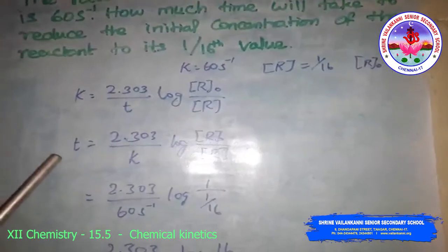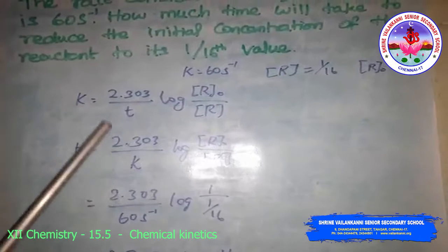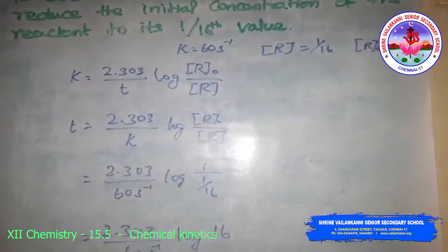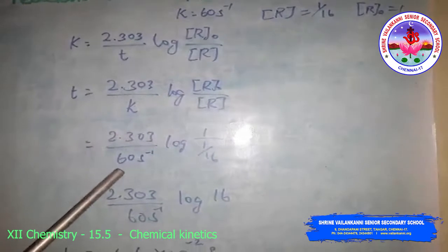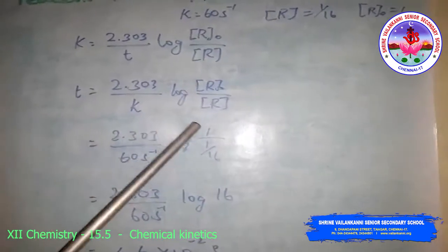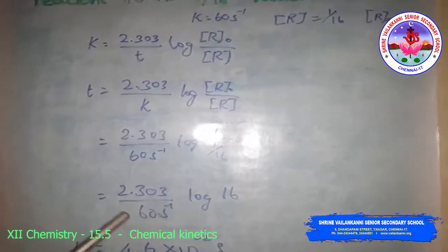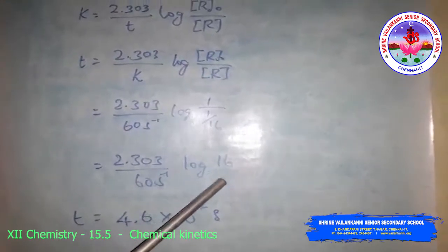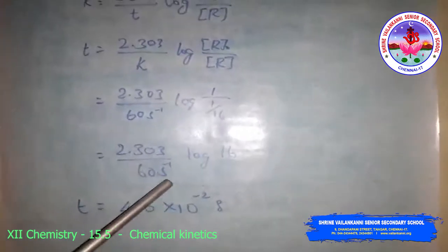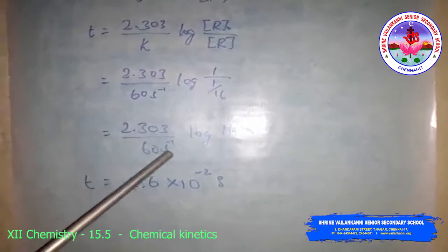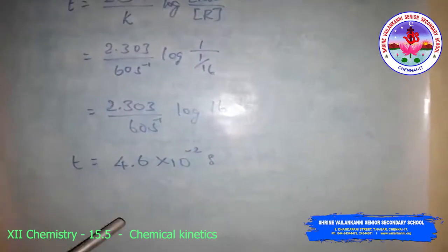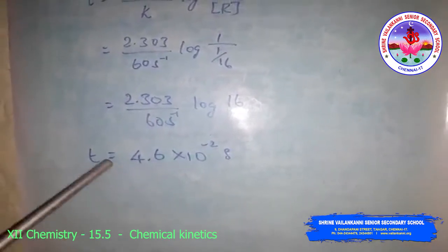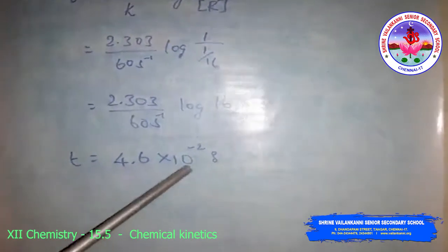Rearranging: t = (2.303/k) × log(R₀/R). Substituting k = 60 s⁻¹, R₀ = 1, R = 1/16: t = (2.303/60) × log(16). After simplifying, log 16 gives t = 4.6 × 10⁻² seconds. The required time is t = 4.6 × 10⁻² seconds.